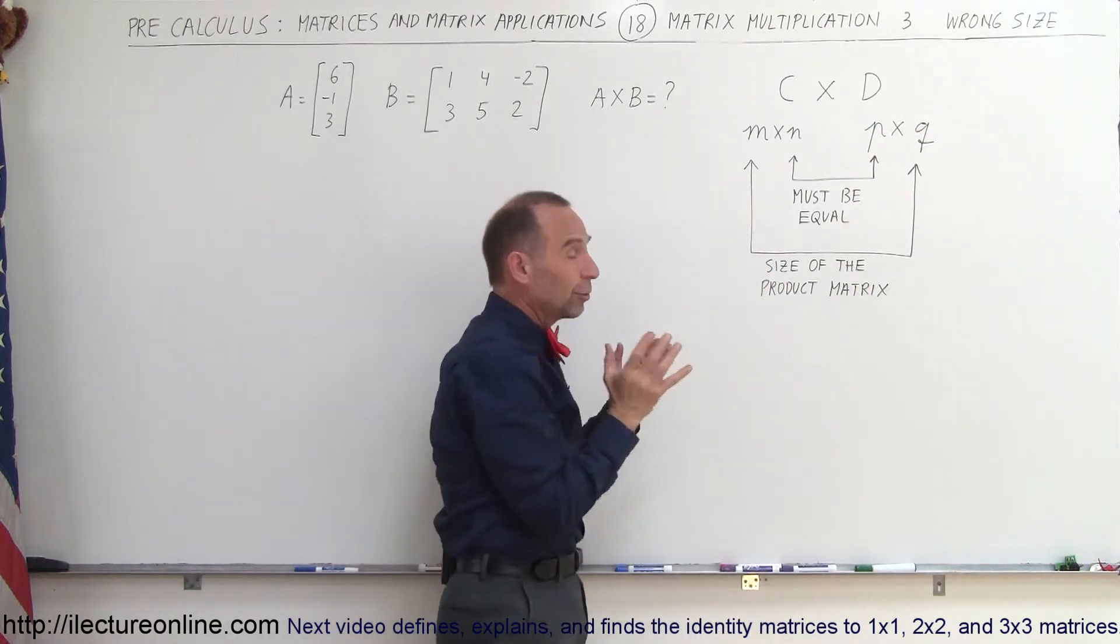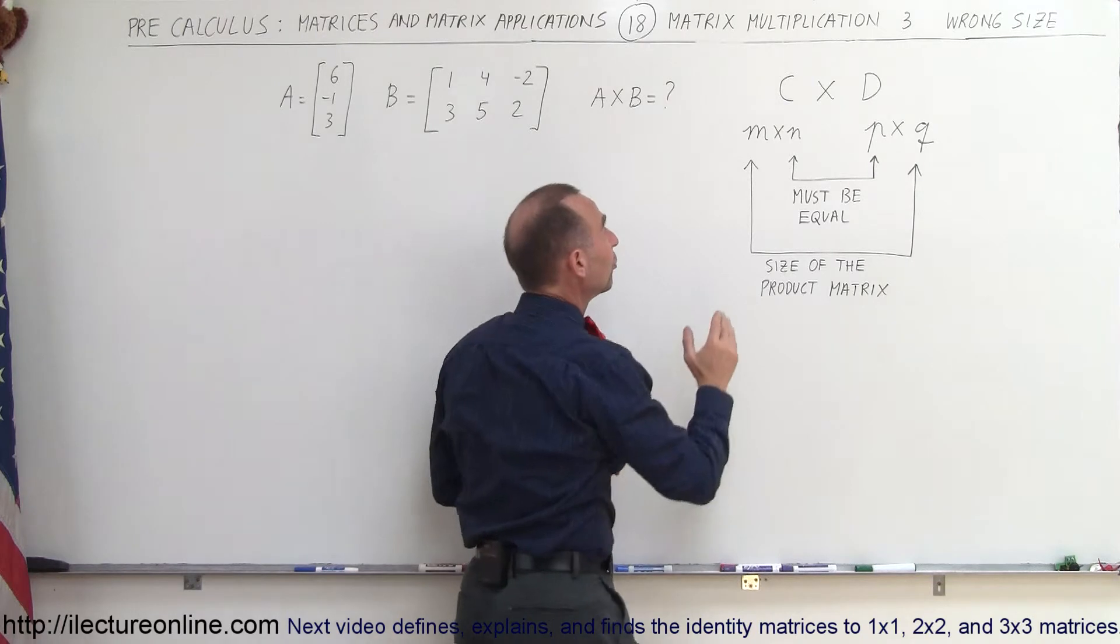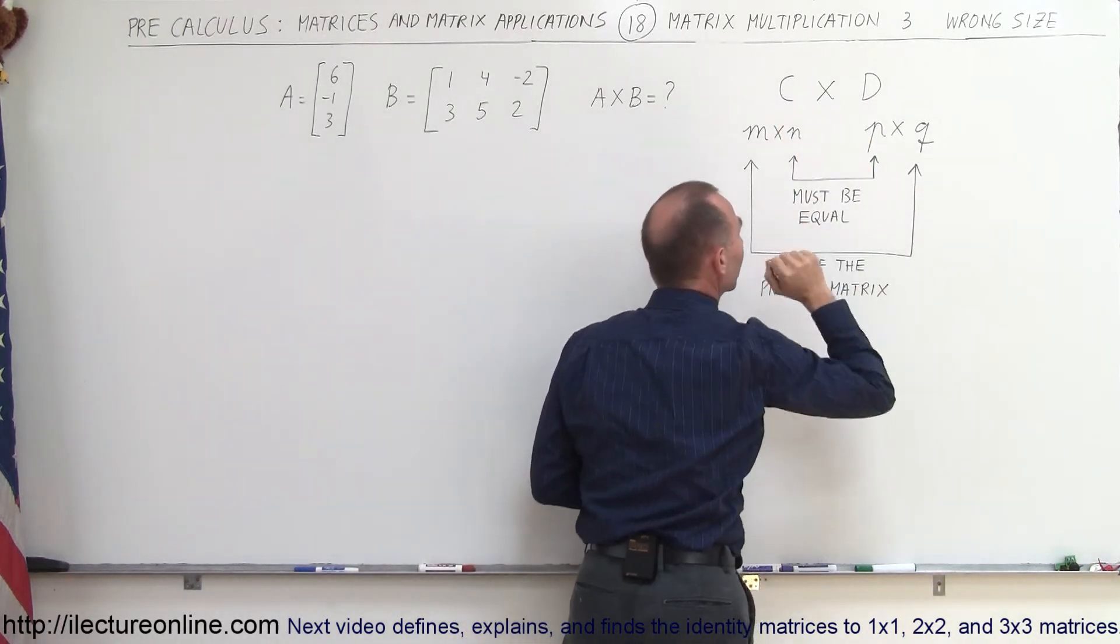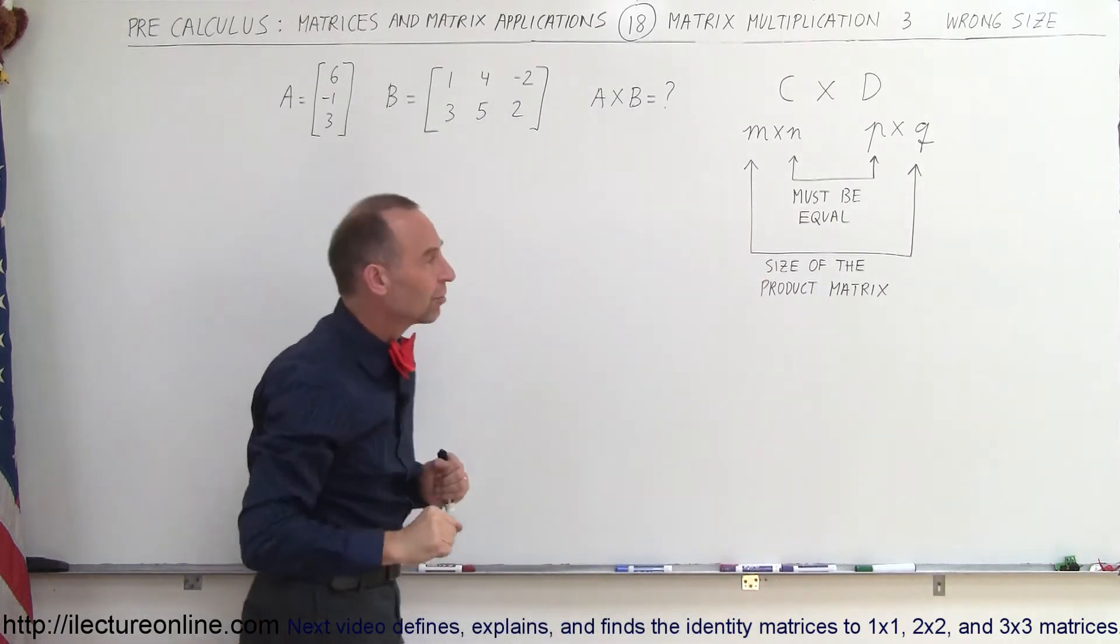We can see there, in order to be able to multiply the two matrices, the number of columns of the first matrix must equal the number of rows of the second matrix. If they're not equal, you cannot multiply the two matrices.